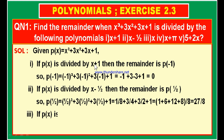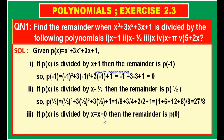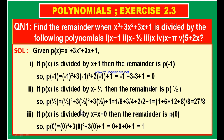Third bit: if p of x is divided by x, which is in the form of x plus 0, then x equals 0. Zero is neither positive nor negative, so the remainder when p of x is divided by x is p of 0. Substituting: p of 0 equals 0 cube plus 3 into 0 square plus 3 into 0 plus 1, which equals 0 plus 0 plus 0 plus 1. Therefore, the remainder is 1.